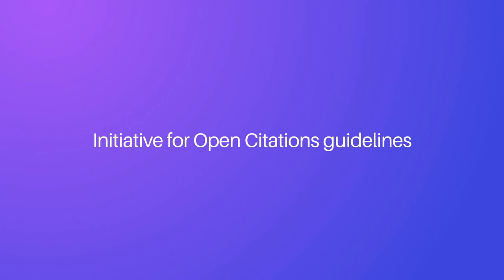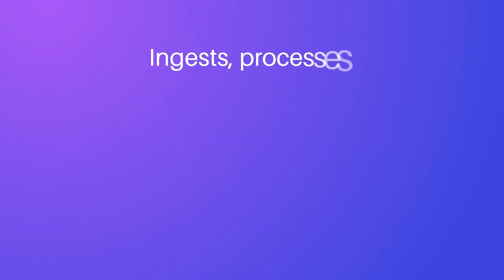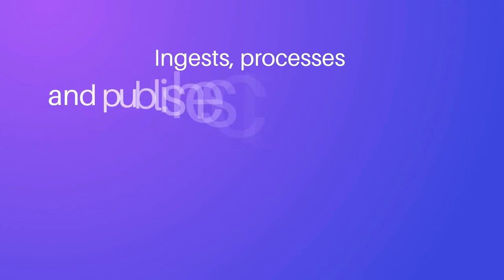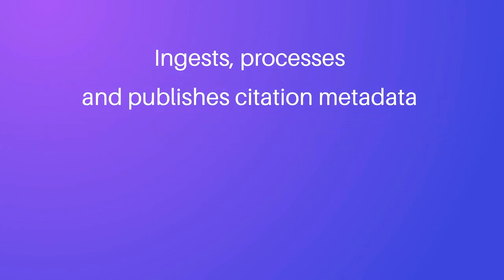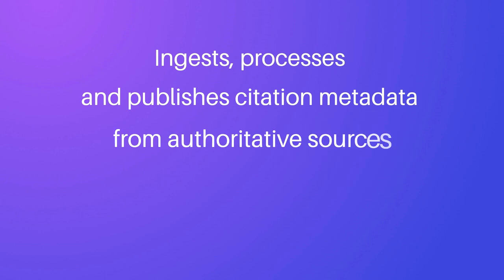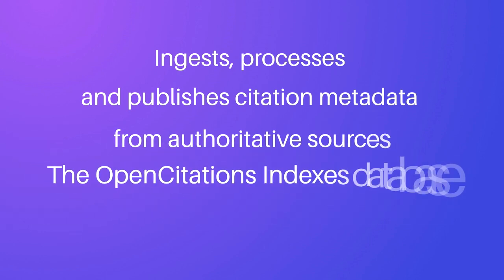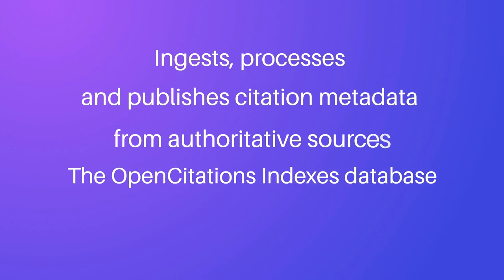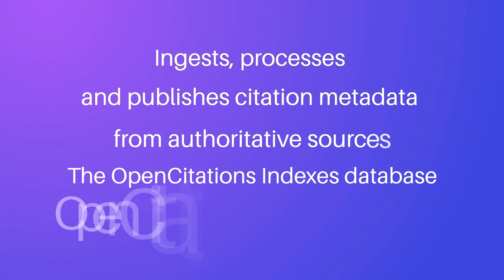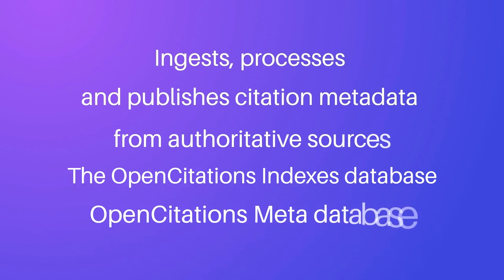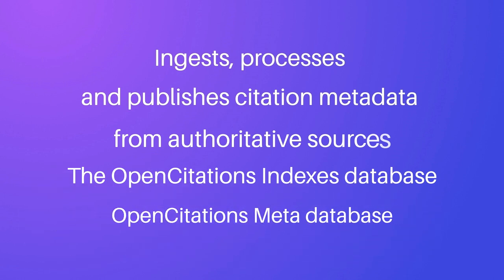But how does Open Citations work? Open Citations ingests, processes, and publishes citation metadata from various sources and makes them available in several collections: the Open Citations indices, which store and deliver citation links between scholarly entities, and Open Citations Meta, which stores and delivers bibliographic metadata for all citing and cited entities involved in the Open Citations indices.